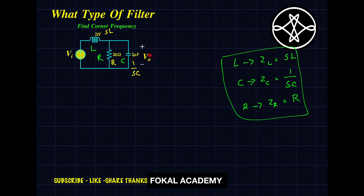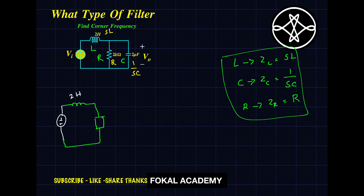Now find the output voltage at the capacitor. Here resistor and capacitor are both in parallel. In parallel, the voltage drop is the same. So find the overall impedance for these two components and replace with a single component. The circuit becomes like this — inductor in series with the equivalent impedance for resistor and capacitor. The equivalent impedance is: impedance of R in parallel with impedance of capacitor 1/SC.